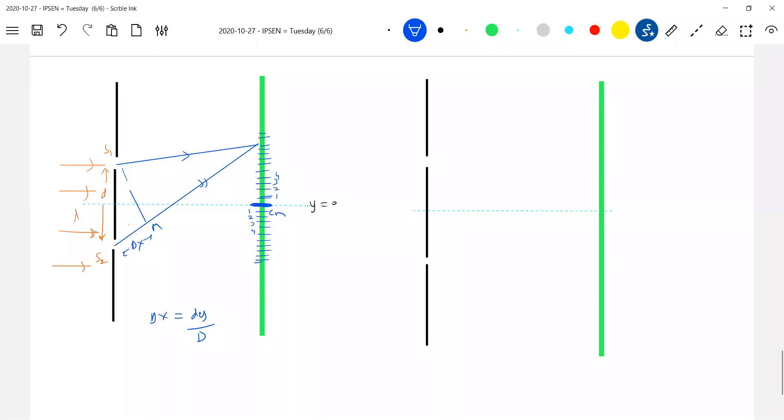Now, we will take the slab, the slits S1, S2. Again, what is the basic formula? S2P, so the net path difference. As usual, we'll write the path difference equation like this here.